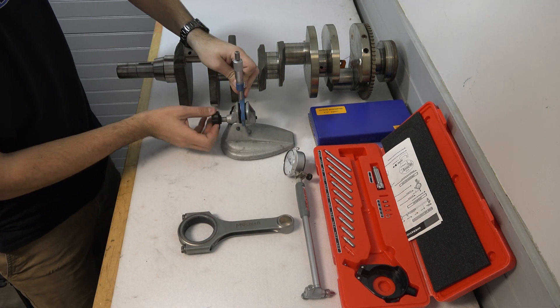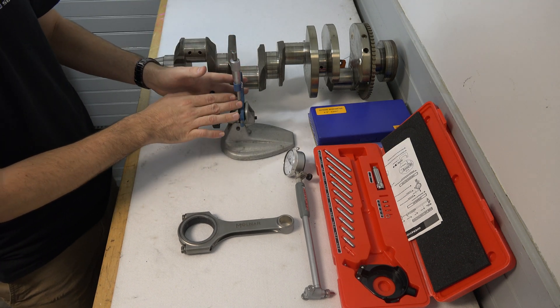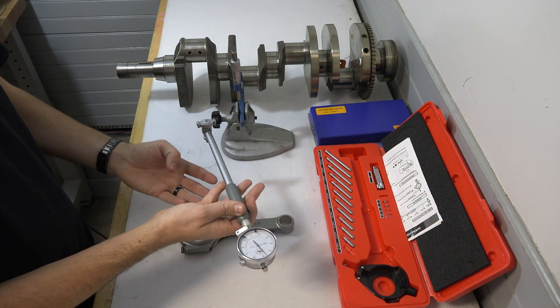I'm going to insert it into a micrometer stand here. You can also use a small vise. Just make sure you wrap a rag around the micrometer here to keep it from getting damaged. Take our dial bore gauge here.